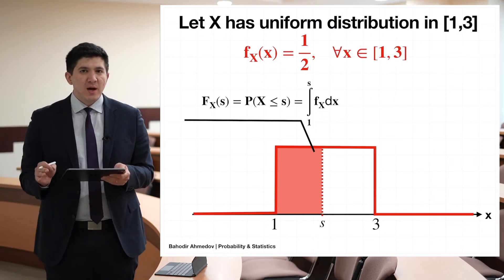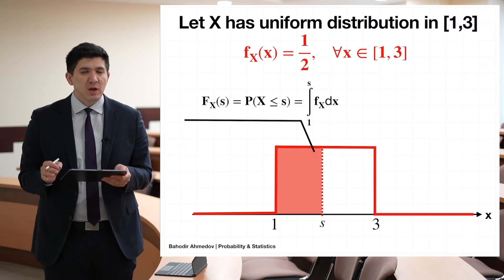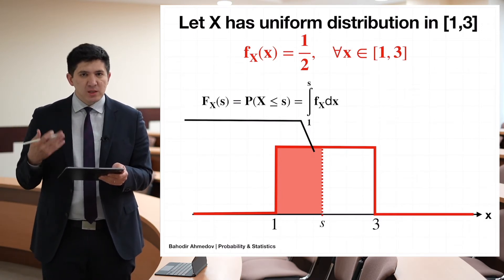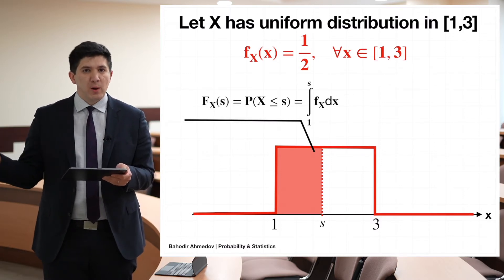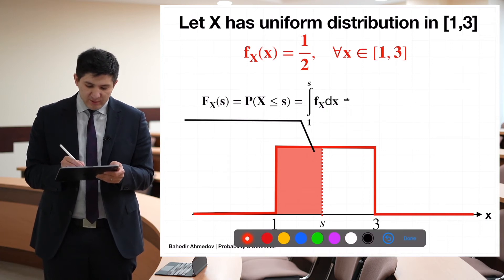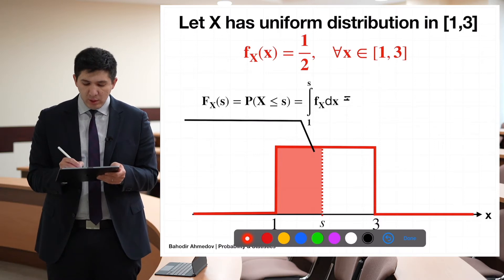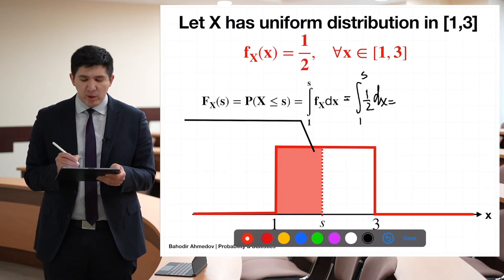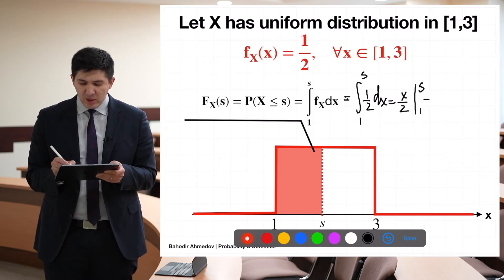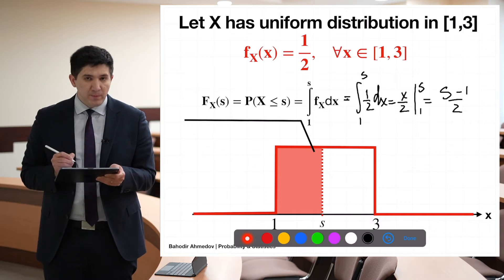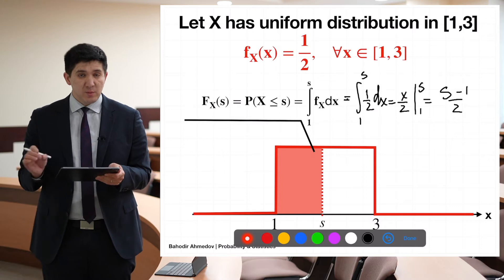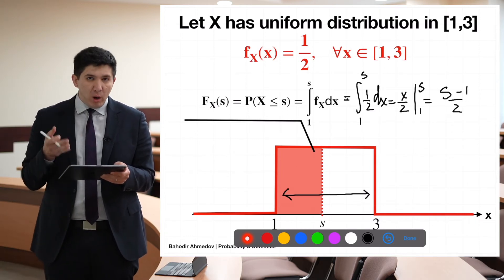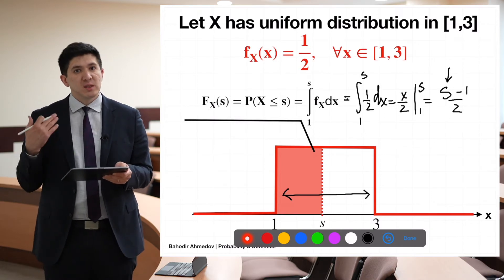Now let's discuss how we can derive the cumulative distribution function in general — not until 1.5, but for any point S. We simply integrate the density function from 1 until S. Substituting the density function of 1/2, we get the integral of 1/2 from 1 to S dx, which gives x/2 from 1 to S, resulting in S minus 1 divided by 2. This is the cumulative distribution function for any value of S between 1 and 3. If you substitute 1 for S it equals 0, and if you substitute 3 it equals 1.